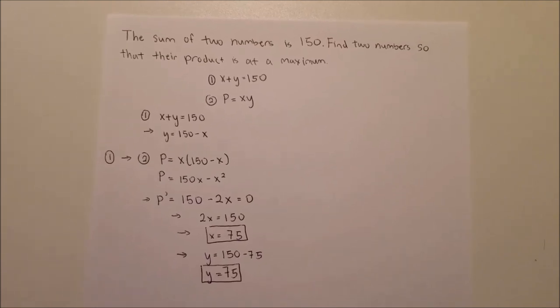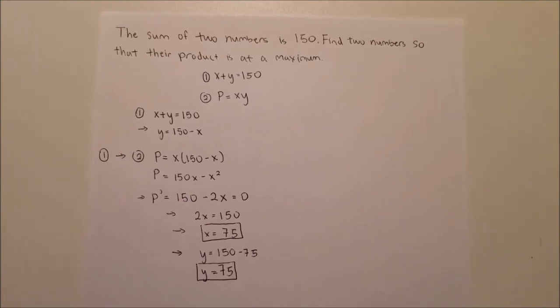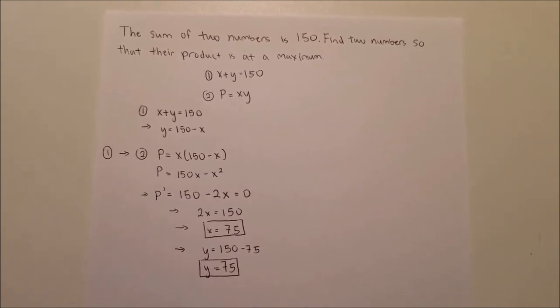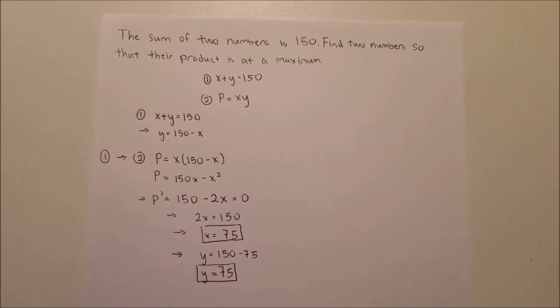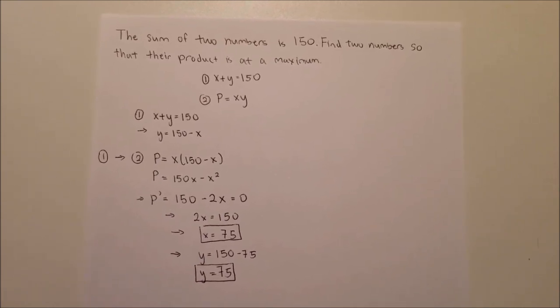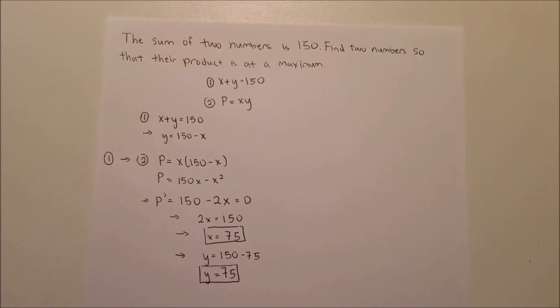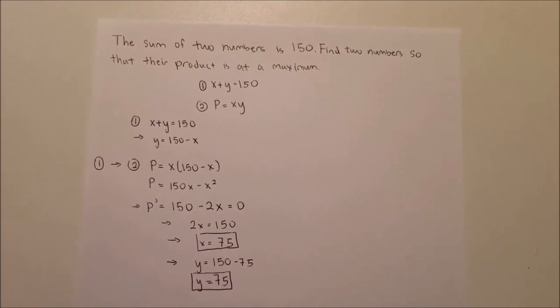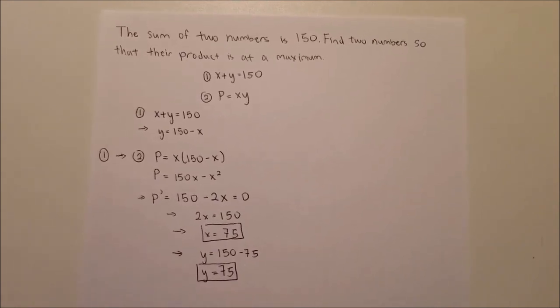So, before we get to optimizing your basketball shot, we should go over what is optimization first and how do we do it. Optimization is used to find when a certain function is at its maximum or minimum value.